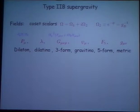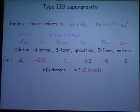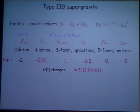Just to set the scene of notation, let me remind you that type 2b theory has the following set of fields. The scalars — which I'm calling omega for a particular reason in this talk — the complex scalar sits in a coset, the coset being SL(2,R) over U(1). Then there's a set of bosonic and fermionic fields, and in particular they carry a U(1) charge which is associated with the U(1) in the coset.